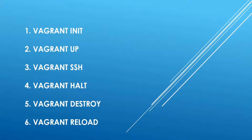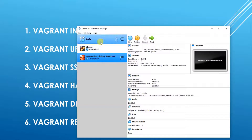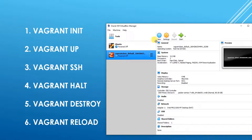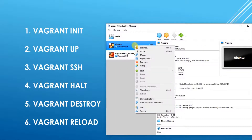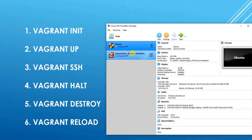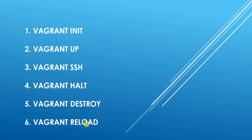The fourth command is vagrant halt. This is used to shut down the vagrant virtual machine — so vagrant up is power on, vagrant ssh is signing in, and vagrant halt is shutdown. Then vagrant destroy is used to destroy a virtual machine — to delete it from the virtualizing hypervisor. In this case I'm using VirtualBox, so if I run vagrant destroy it's going to delete it, the same as clicking and removing it from my system.